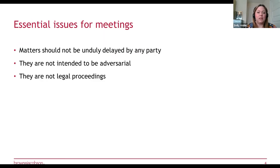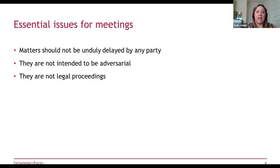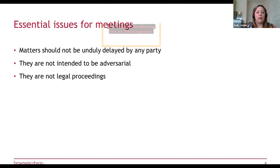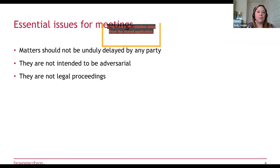The essential issues to consider for any of these meetings is that matters should not be unduly delayed by any party. You can often see repeated requests to delay for reasons such as employee availability, union representative availability, or illness. You should consider these requests, but if no full reason has been given or there are repeated requests due to unavailability of a union representative, consider whether it is actually reasonable to delay the hearing again.